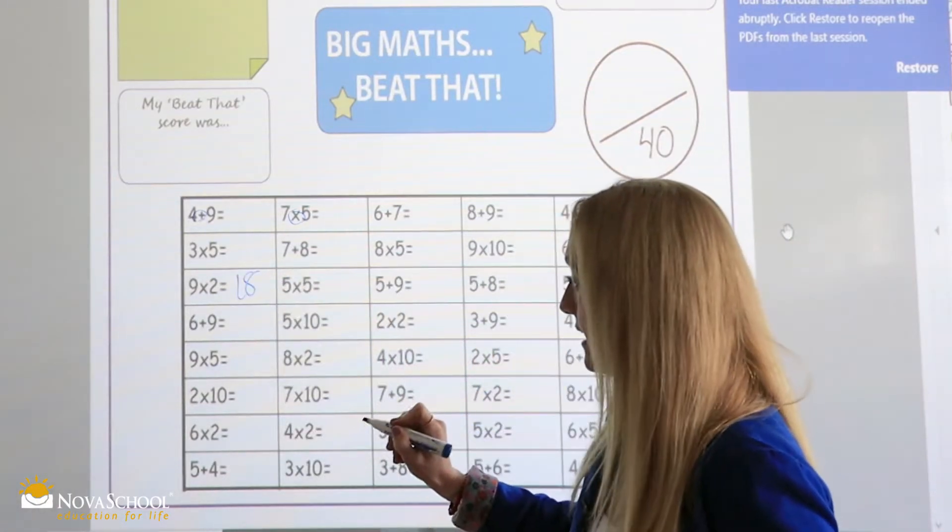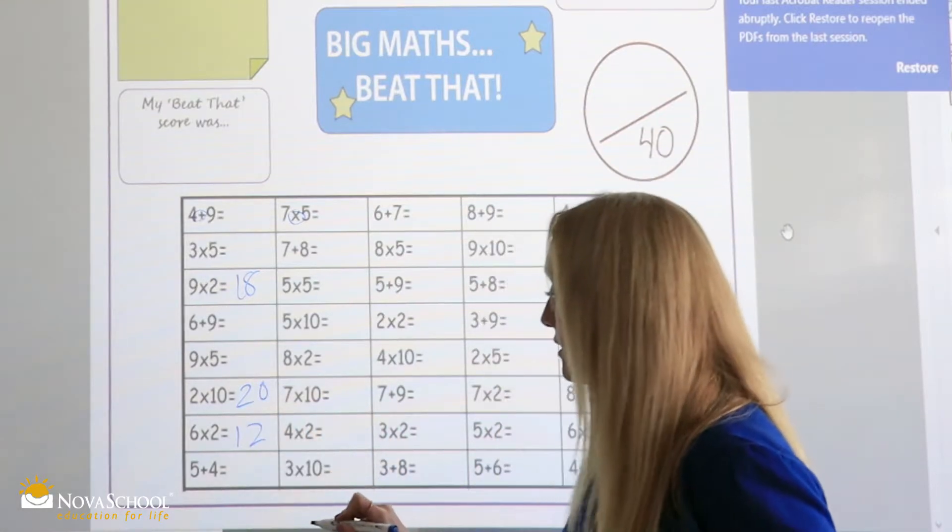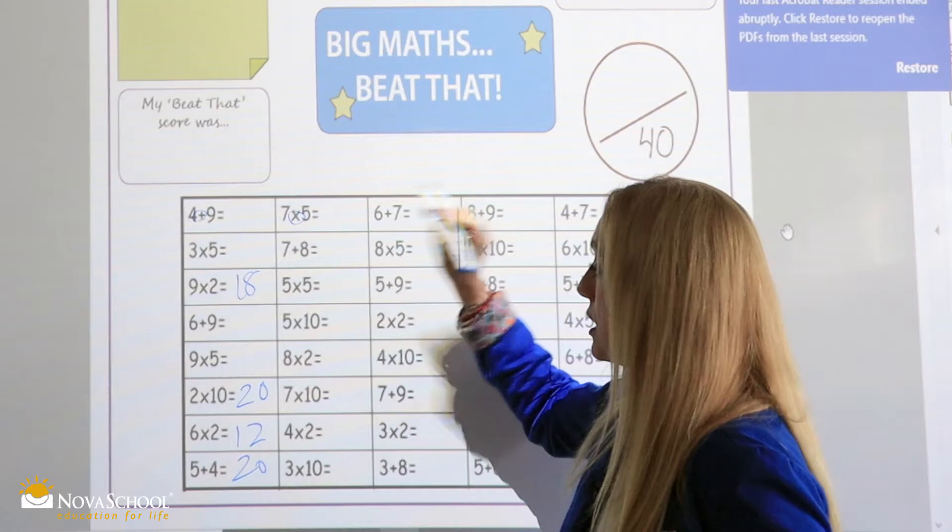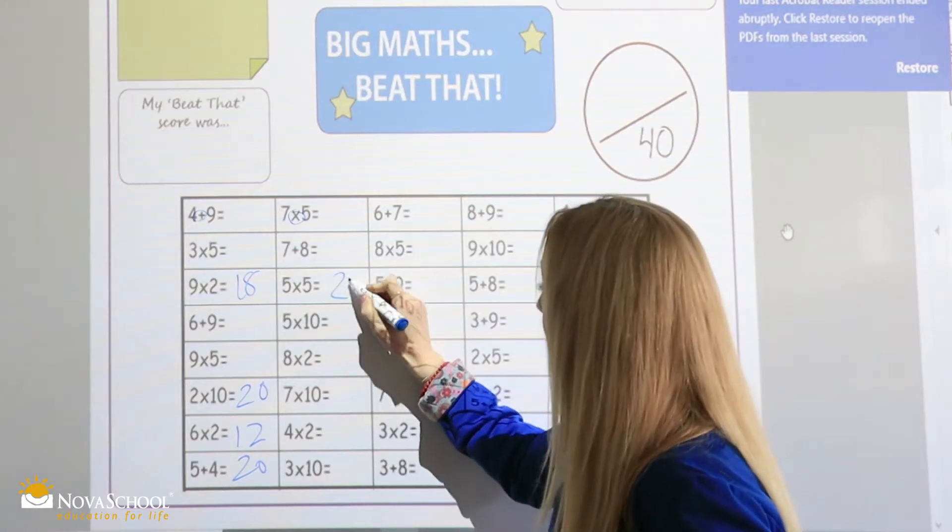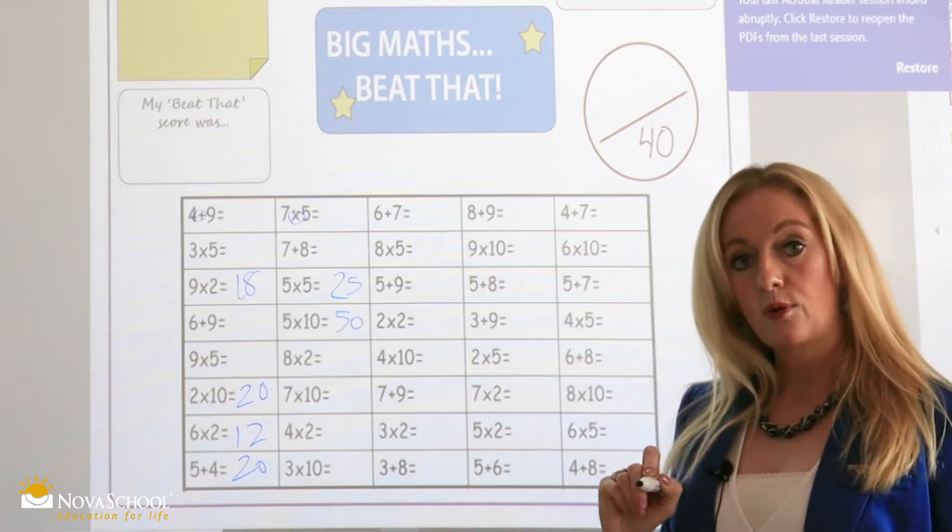Nine times two, eighteen. Two times ten, twenty. Six times two, twelve. Five times four, twenty. Don't know that one. Five times five, twenty-five. Five times ten, fifty.